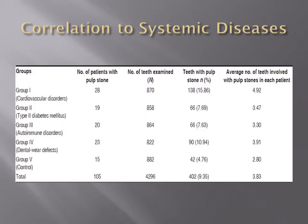Group 2, diabetes mellitus, has much lower than 8% with 3.5 pulp stones per patient. Autoimmune diseases has 7.63% of teeth with pulp stones and 3.3 pulp stones per patient.